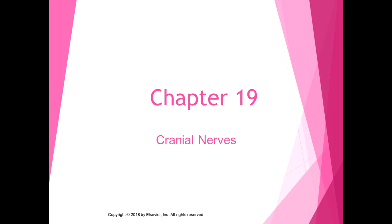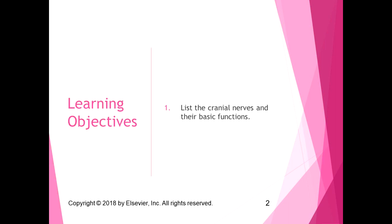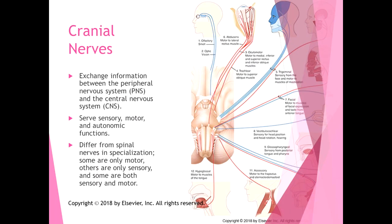We are going to ever so briefly go over the cranial nerves. We do not need to know all the detail that's in chapter 19 in the book. We're just going to briefly go over each nerve. For the learning objectives, I just want you to be able to list the cranial nerves and their basic functions — for example, cranial nerve 1 is the olfactory nerve and its basic function is smell.